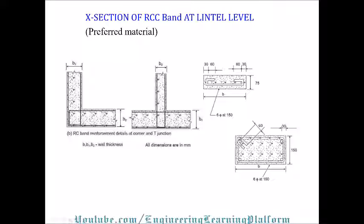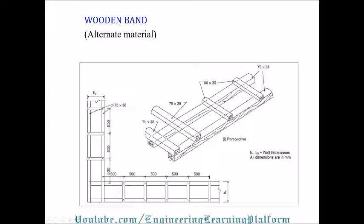This is the cross-section of an RCC band lintel beam. Lintel beams and band beams are provided at sill level, lintel level, and plinth level, and the stone wall should have anchorage developed inside these beams. A wooden band also braces the wall well; however, reinforced concrete band beam is always much preferred in areas with excessive freezing or high temperatures, and in many parts of the world where wood is not abundantly available, concrete band beams are preferred.